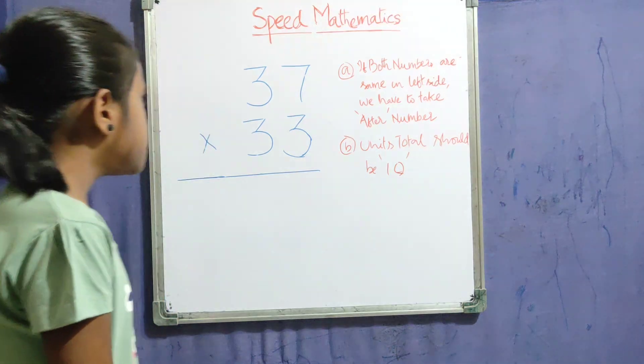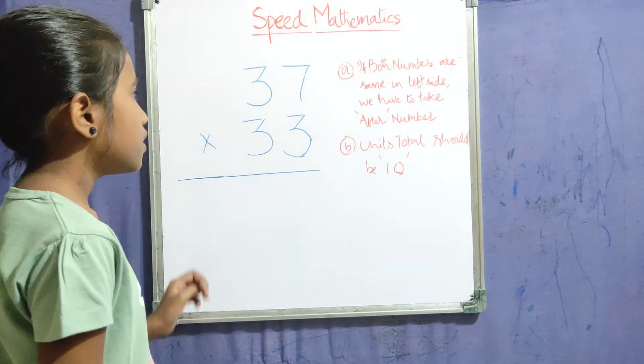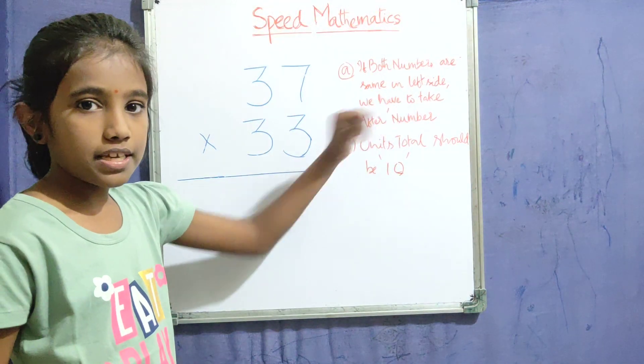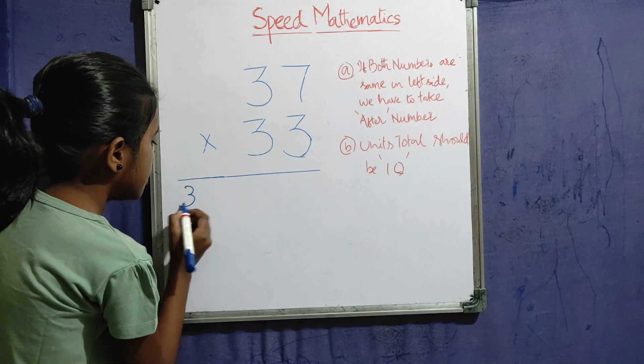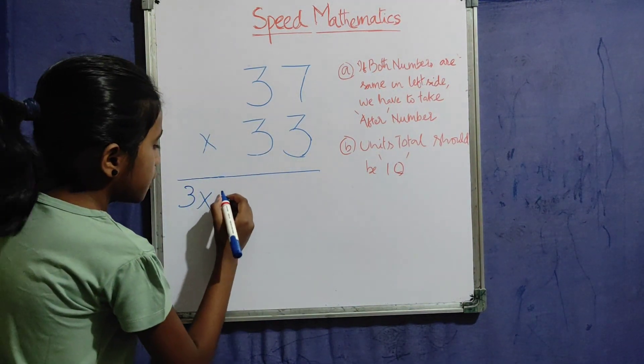Our question is 37 into 33. Here, 3 and 3. The first condition is satisfied, so we have to take the next number, the after number.